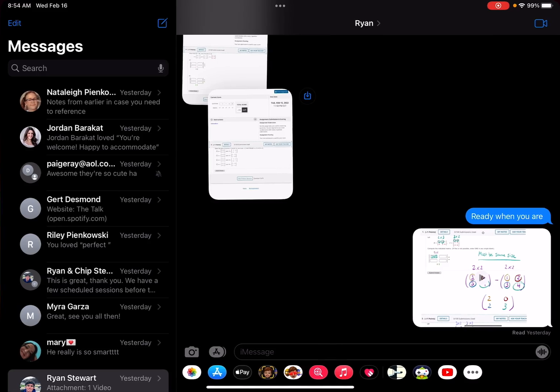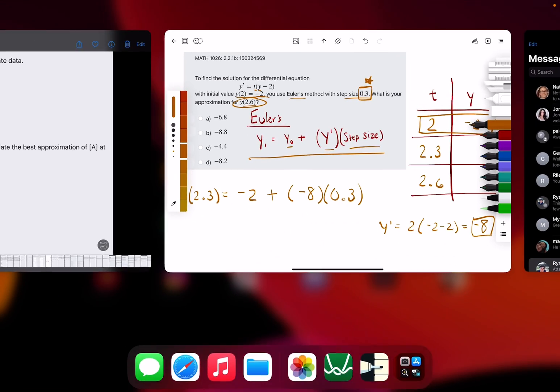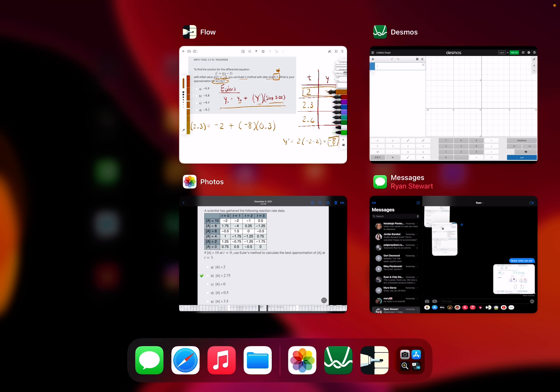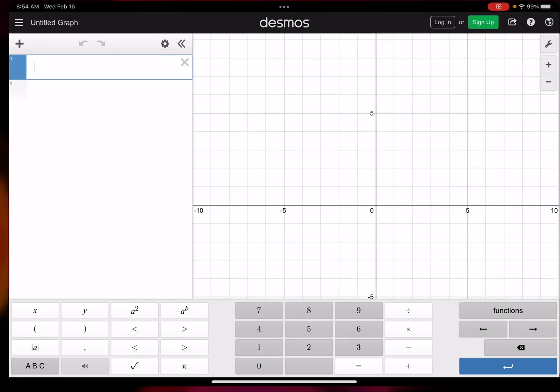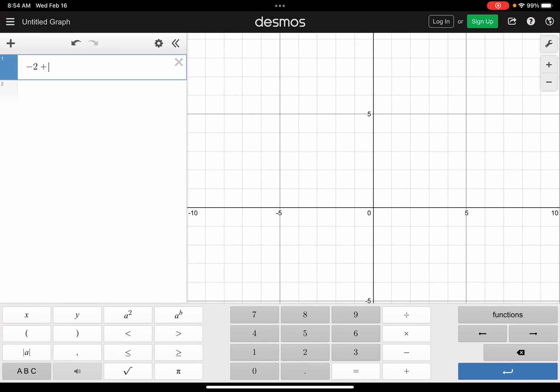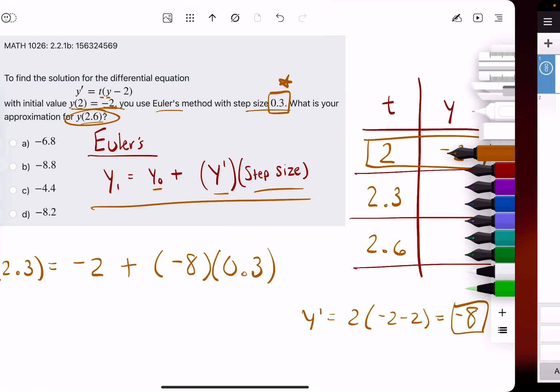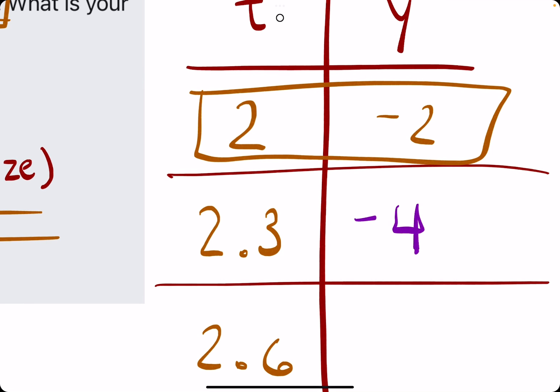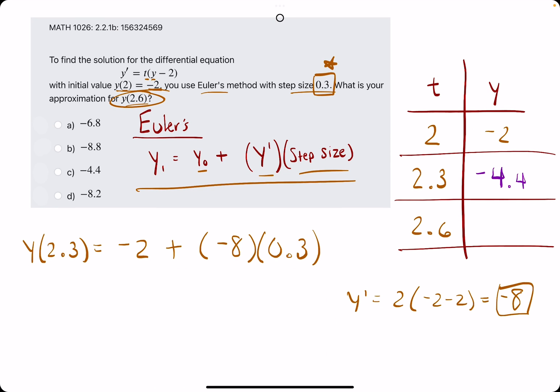We will calculate this in Desmos. We have negative 2 plus negative 8 times 0.3, and we get negative 4.4. So negative 4.4 becomes our estimated y value for 2.3.